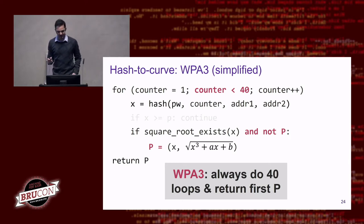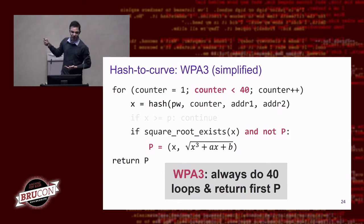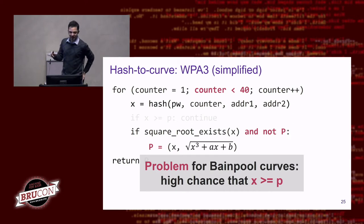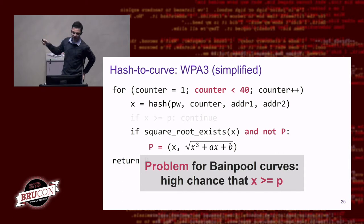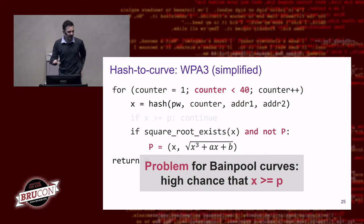On first sight this looks like a valid defense against timing leaks. However, there is a problem when using brainpool curves — which WPA3 also supports alongside NIST elliptic curves. With brainpool curves, the hash output that becomes the X coordinate has a high chance of being larger than the prime of the elliptic curve, similar to the modP problem. This would introduce biases in calculations, so the value X must be smaller than prime P.